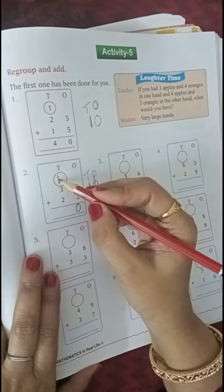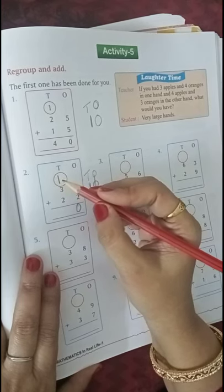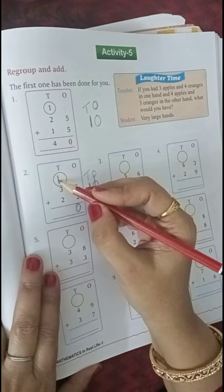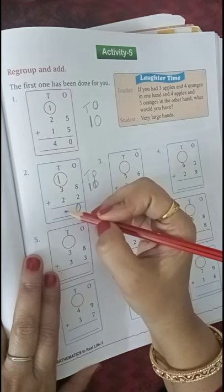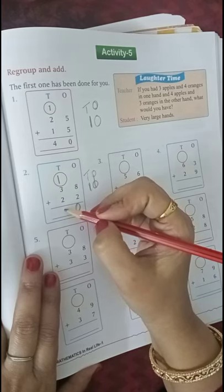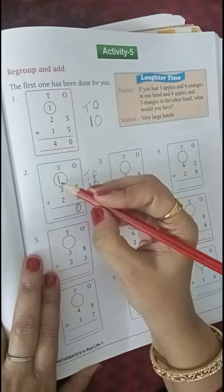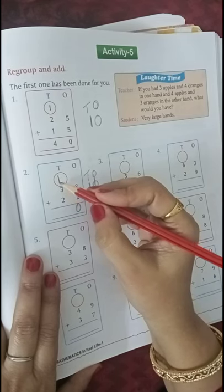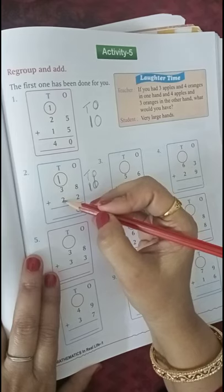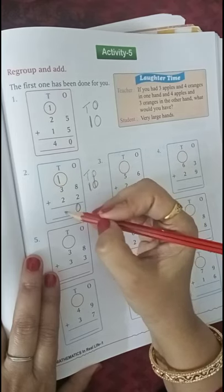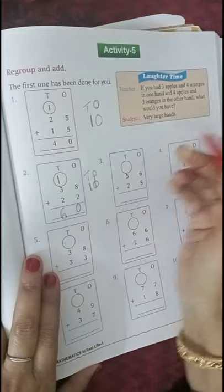I always say this 1 is Mr. 1, and Mr. 1 is a very angry man. If you don't add Mr. 1, then the sum will be wrong. So Mr. 1 has to be added. 3 plus 1 is 4, or you can do 3 plus 2, 5 plus 1, 6. You can do this way also.